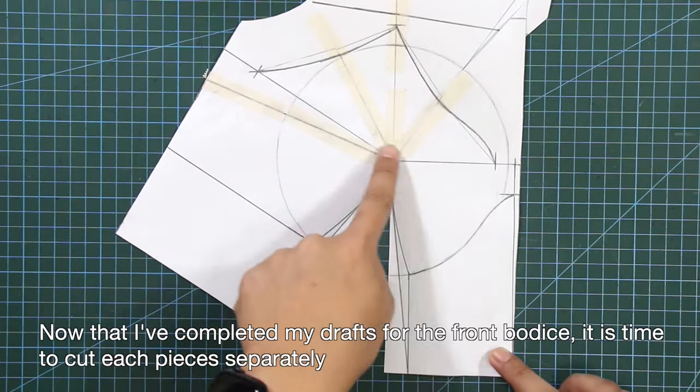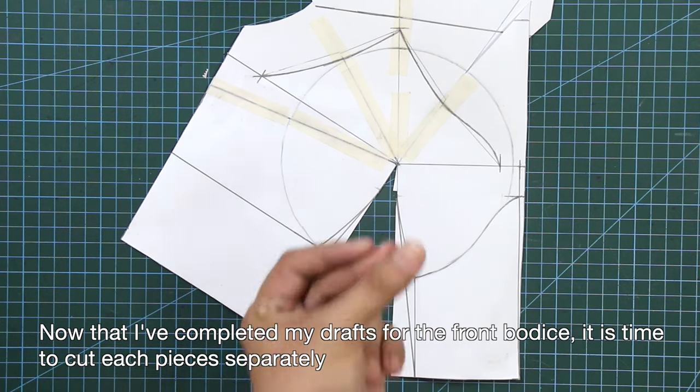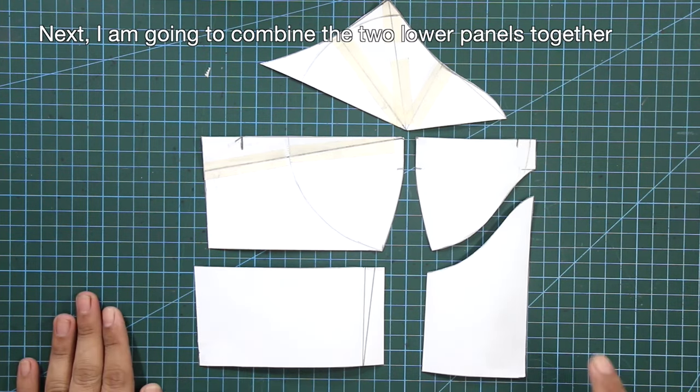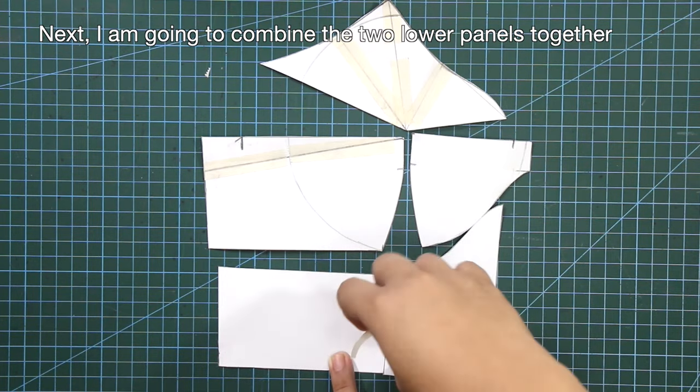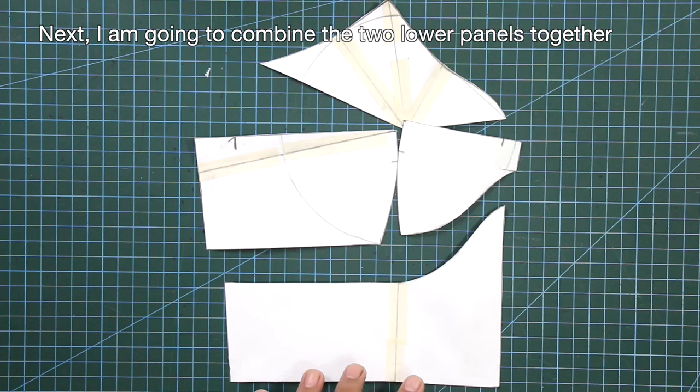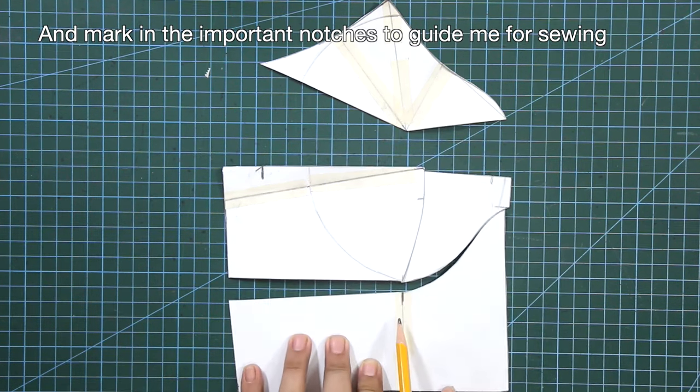Now that I have completed my draft for the front bodice, it is time to cut each piece separately. Next I'm going to combine the two lower panels together. After that, I'm going to mark in the important notches to guide me for sewing.